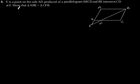Exercise 6.3, Question number 8. E is a point on the side AD produced of a parallelogram ABCD and BE intersects CD at F. Show that triangle ABE is similar to triangle CFB.